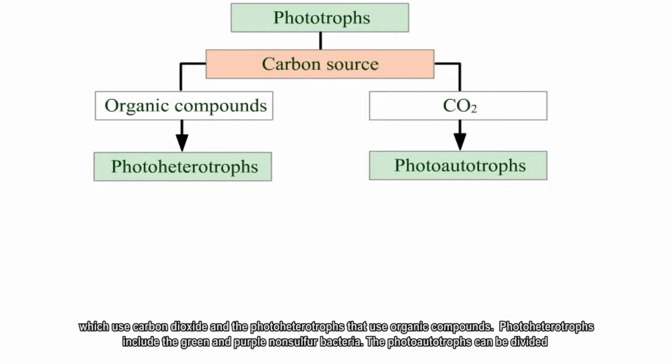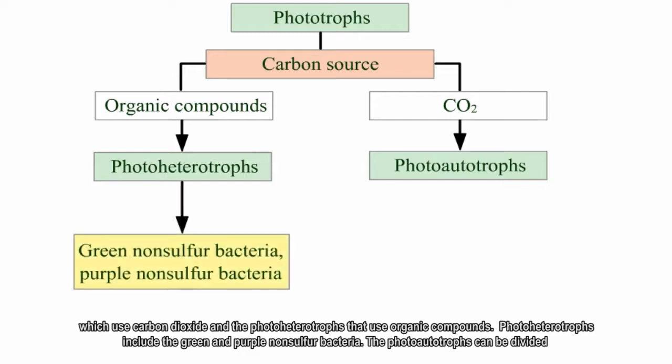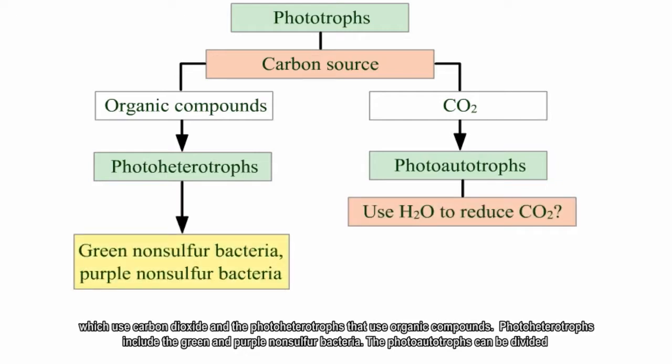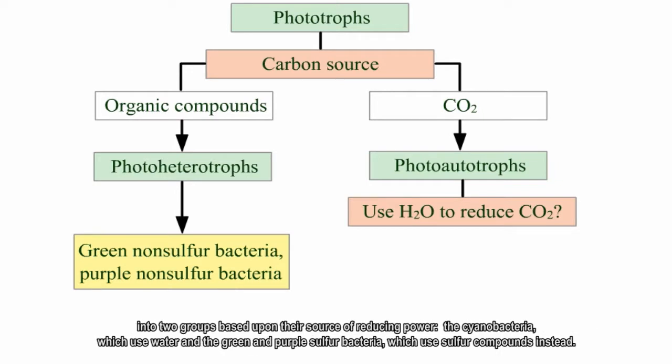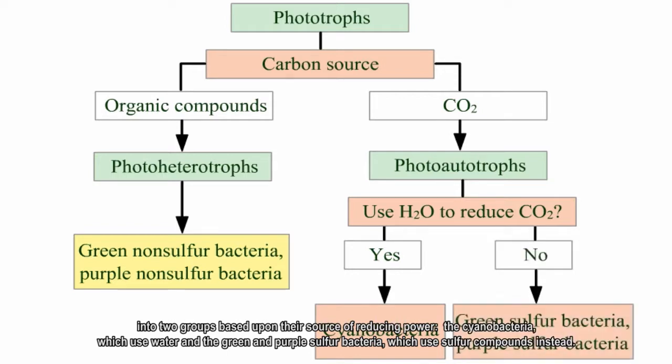Photoheterotrophs include the green and purple non-sulfur bacteria. The photoautotrophs can be divided into two groups based upon their source of reducing power: the cyanobacteria, which use water, and the green and purple sulfur bacteria, which use sulfur compounds instead.